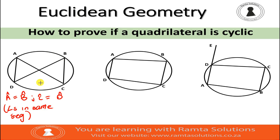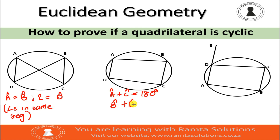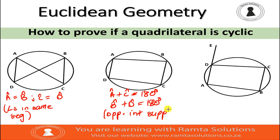So if you look at this quadrilateral, you can say: if angle A plus angle C is equal to 180 degrees, and angle B plus angle D is equal to 180 degrees — do you guys remember the reason?